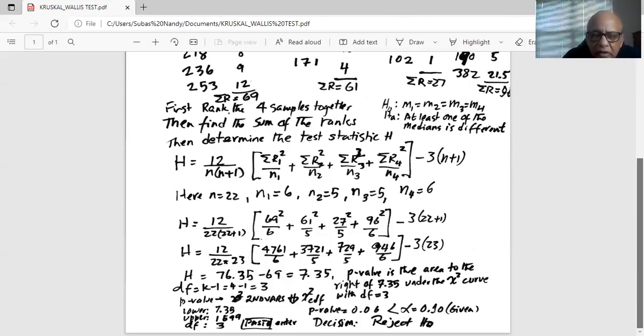Now, we are given alpha equals 0.1. We need to calculate the p-value associated with this test statistic. The p-value is the probability of finding a test statistic as extreme as 7.35 or more extreme, with degrees of freedom K minus one. K is the number of samples, which is four, minus one is three. So the p-value is the area to the right of 7.35 test statistic under the chi-square curve with degrees of freedom three.